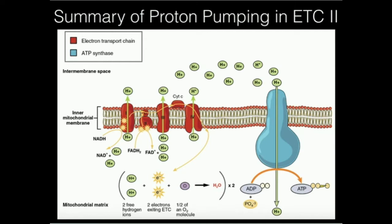Just to do a quick review of what we're talking about: down here we have the mitochondrial matrix, and up here is the intermembrane space. We talked about in other videos how complexes 1, 3, and 4 pump protons from the matrix into the intermembrane space. Now because the concentration of protons out here is very high relative to inside the matrix where it's pretty low, because they're pumping protons up into the intermembrane space, it's actually active transport and that's why they're termed proton pumps.